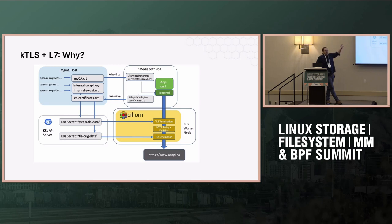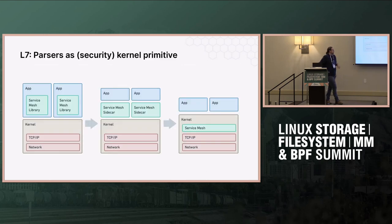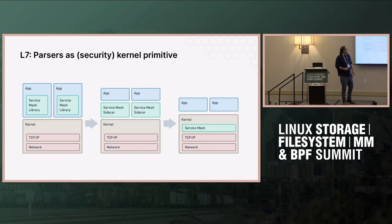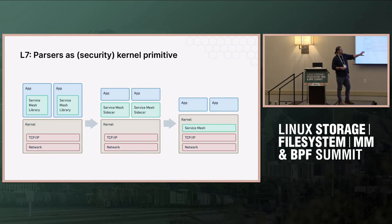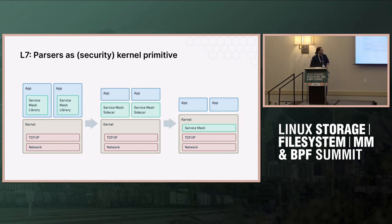How do I do failover on that box? How do I do high availability? What we want to get to is a model where we just move all of that observability into the kernel, and the kernel becomes kind of service mesh aware. You get both benefits: less copying of data, and you don't have to worry about multiple encrypts. Because the kernel is distributed everywhere in the entire network — everything has a kernel — you immediately get high availability and load balancing by default. There's no single node that is the service mesh; it's completely distributed.